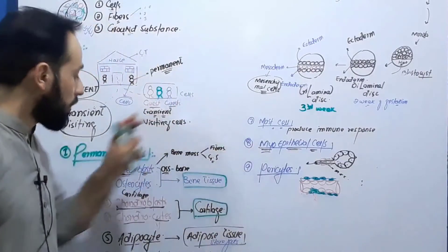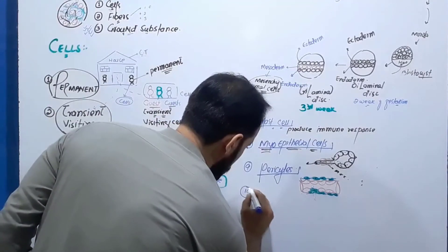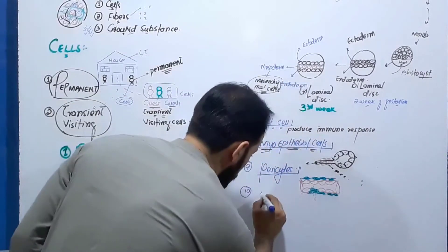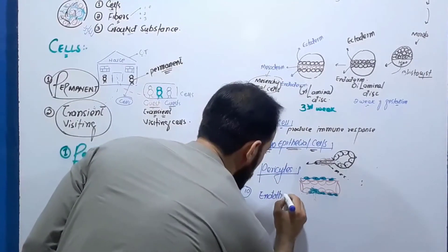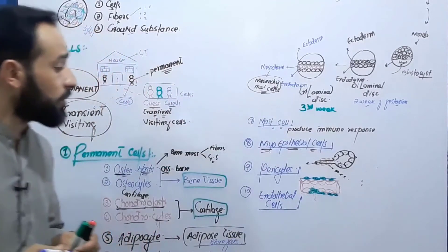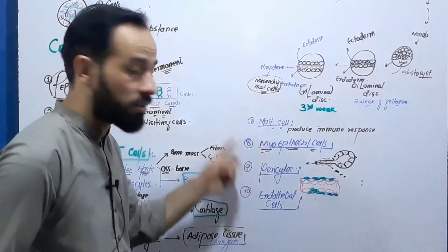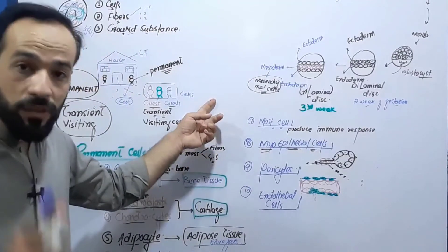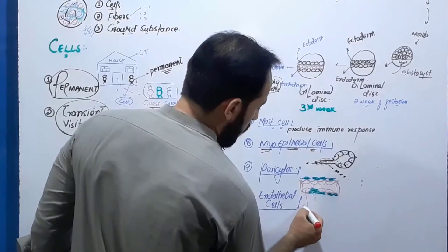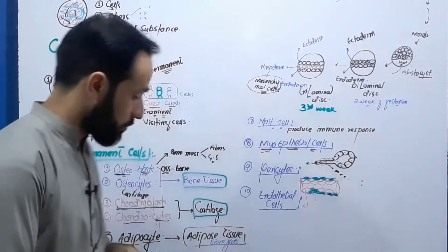Pericytes are also permanent connective tissue cells, present mostly around blood vessels. The tenth type of permanent connective tissue cell is the endothelial cell. Endothelial cells are considered connective tissue cells because their progenitors come from mesenchymal cells. All blood vessels contain endothelial cells, and I will have a separate lecture on them.